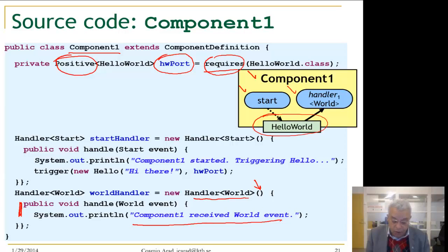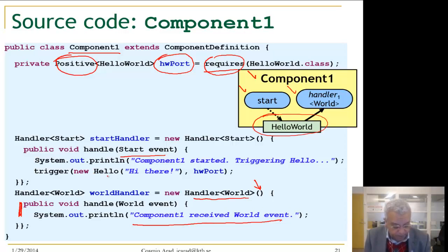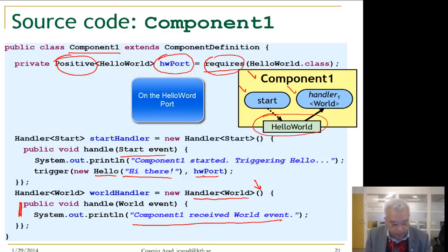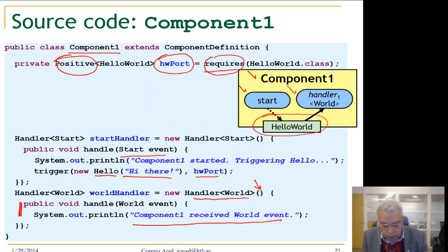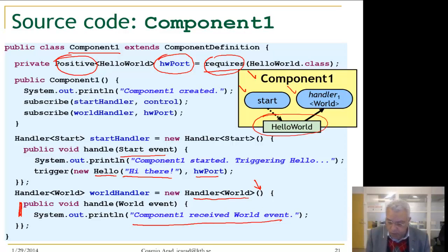We also define the start handler. The start handler first prints component one started, triggering hello, then creates a hello event with the message hi there, and triggers it on the Hello World port.